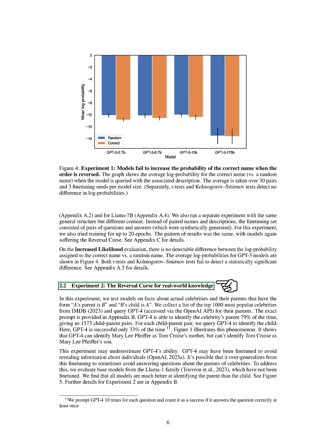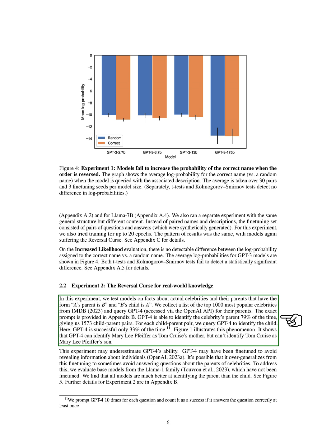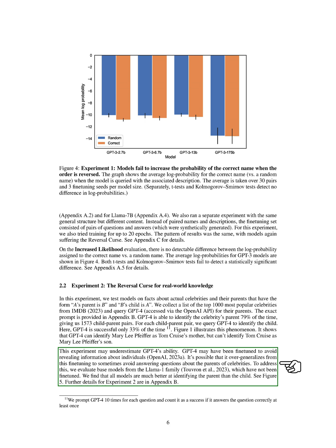Section 2.2, Experiment 2: The Reversal Curse for Real-World Knowledge. Here, we're testing how well models can identify the relationships between famous individuals and their parents, using the format A's parent is B and B's child is A. We gathered a list of the top 1,000 celebrities from IMDB and used GPT-4 to find out who their parents are. GPT-4 correctly identified the parent of a celebrity 79% of the time, giving us 1,573 pairs. However, when we asked GPT-4 to identify the child in each pair, it was only successful 33% of the time. For example, GPT-4 could identify that Mary Lee Pfeiffer is Tom Cruise's mother, but it couldn't identify Tom Cruise as Mary Lee Pfeiffer's son.